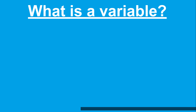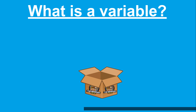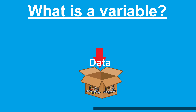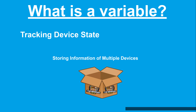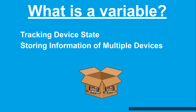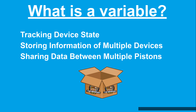In WebCore, a variable is a type of container for data that can be referenced or modified at a later time — either within a piston, between pistons, or even between WebCore instances within a single location. A few use cases for variables are tracking a device state for future use, storing multiple devices in an array, and communicating or tracking the state of devices or events between pistons.